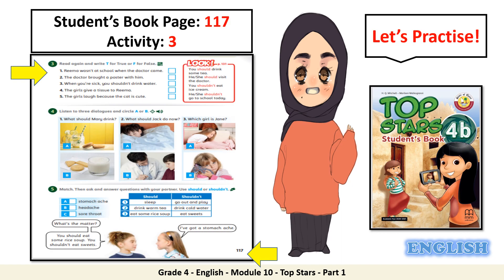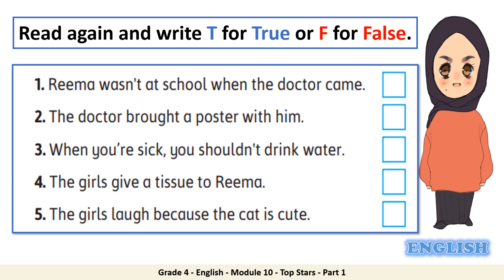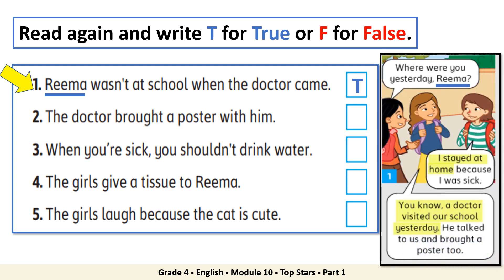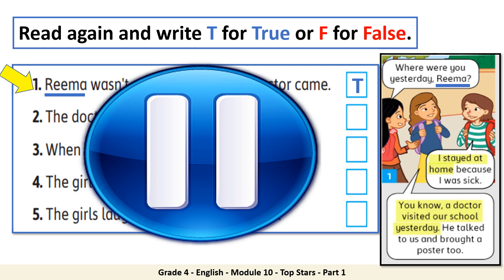Let's practice. Open your students' book page number 117, activity number 3 — read again and write T for true or F for false. In this activity you will read the sentences and check whether they are true or false, going back to the story to make sure of your answer. I will do the first one for you as a model: Rima wasn't at school when the doctor came — True. You will find the answer in frame number one. Now pause the video and do the rest of this activity by yourself.